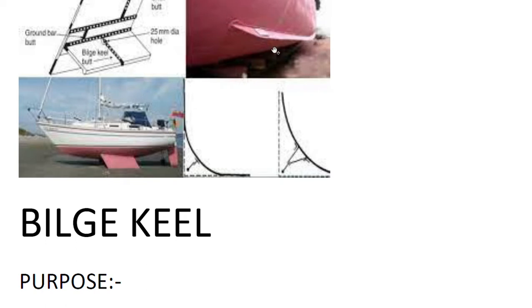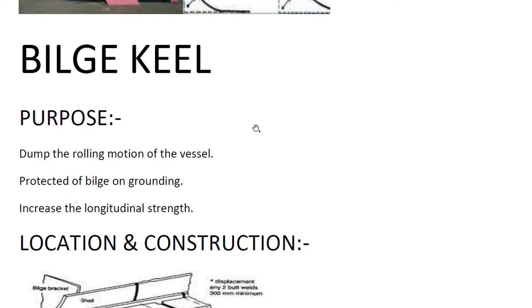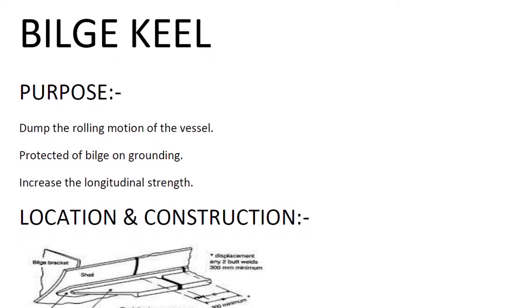From inside, the bilge wells are present throughout the ship. Now what is the purpose of bilge keel? To dump the rolling motion of the vessel, protection of bilge on grounding, and increase the longitudinal strength.